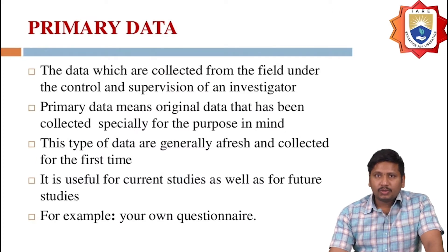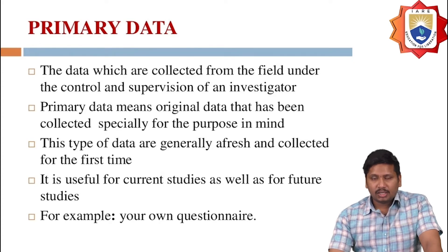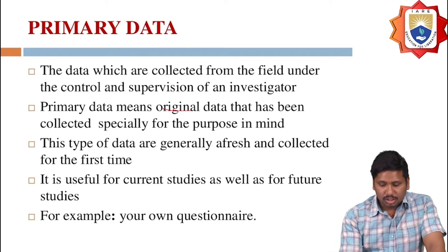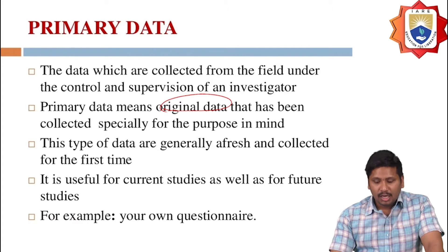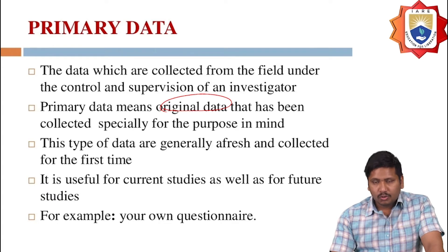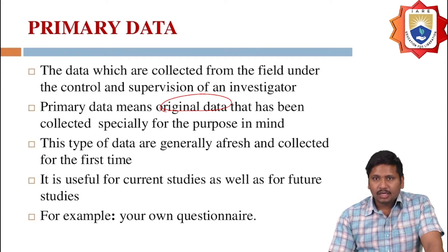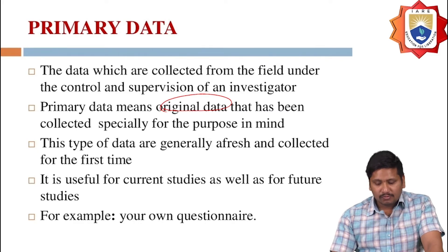Primary data is the data which is collected from the field under the control and supervision of an investigator. Primary data is the original data that has been collected specially for the purpose in mind. This type of data is generally fresh and collected for the first time. It is useful for current studies as well as future studies. For example, a questionnaire is one example of primary data.